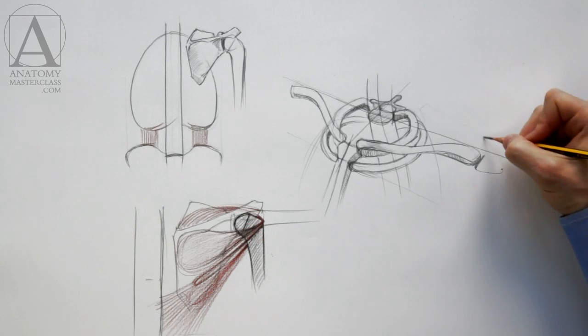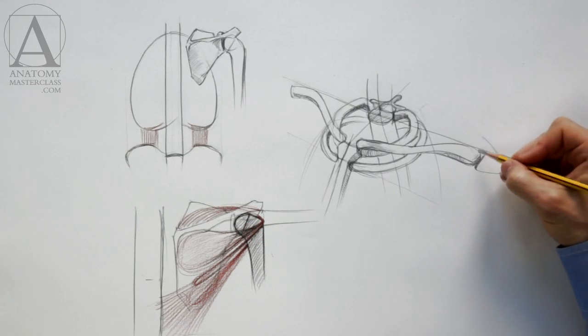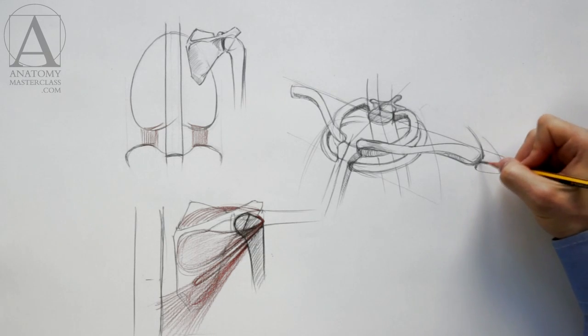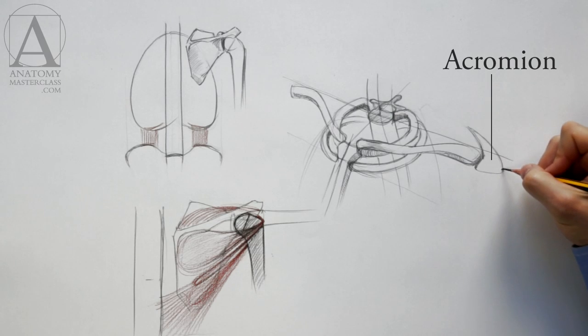As you remember, the clavicle, or collarbone, is connected to the shoulder blade, which is called the scapula. The bony tip of the scapula, where the collarbone is attached, is called the acromion.